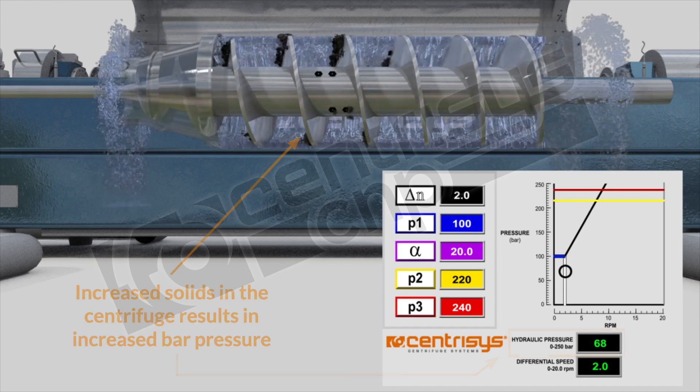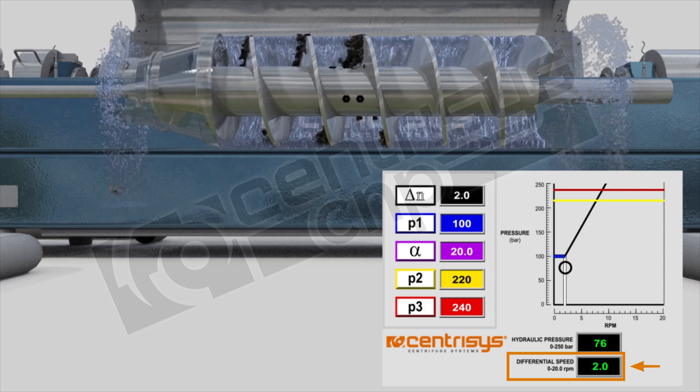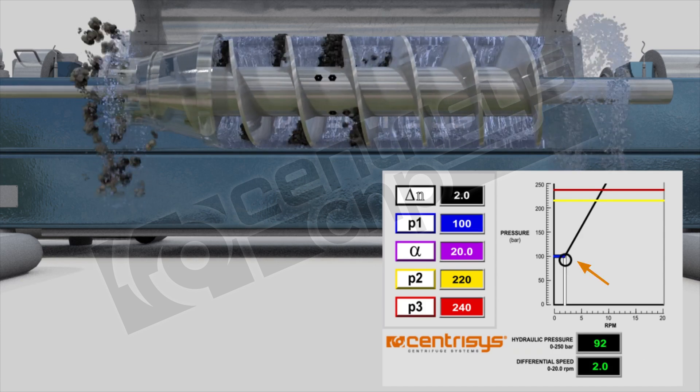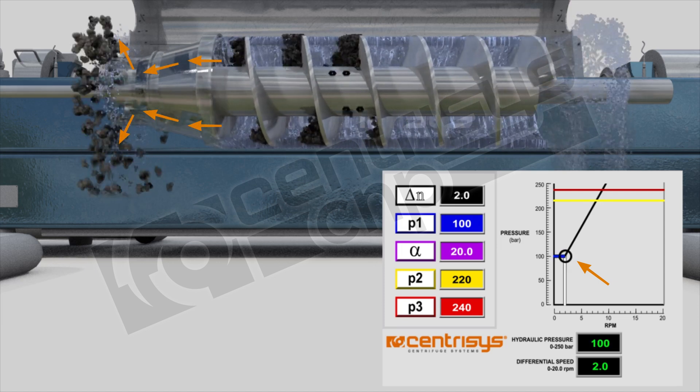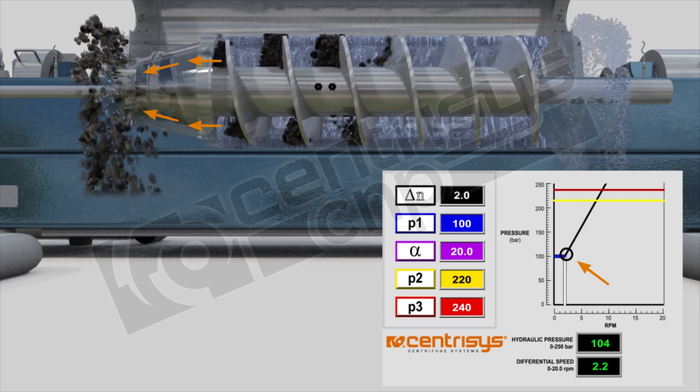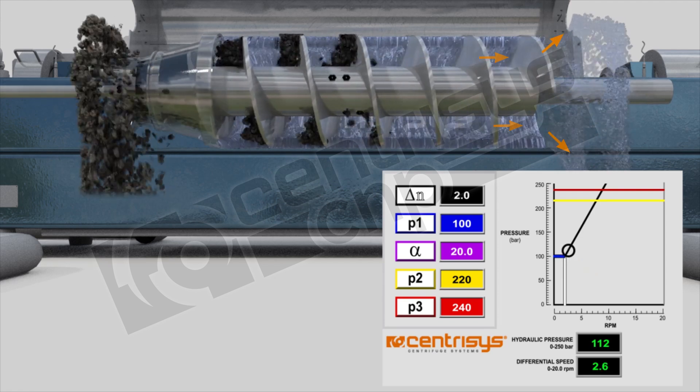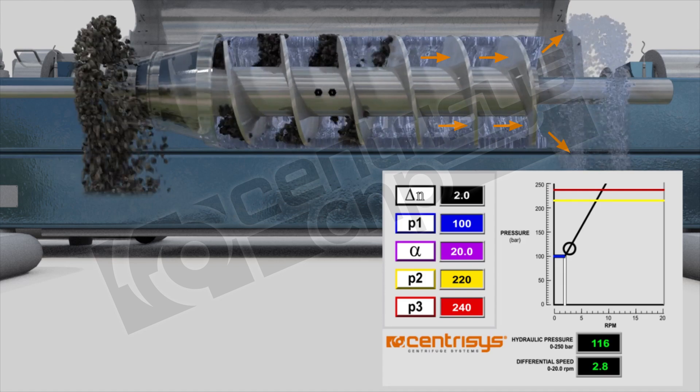You can see the differential speed still at 2 rpm, but now as it goes past the 100 bar you'll see more solids being pushed up this cone area to the solids. The water will stop coming out the solid end and is now pushed to the liquid end by the dam that the solids form.